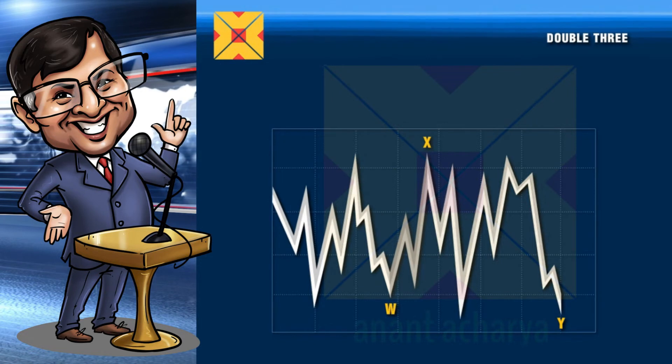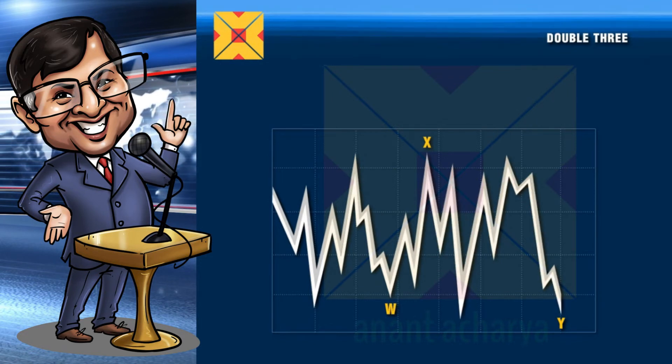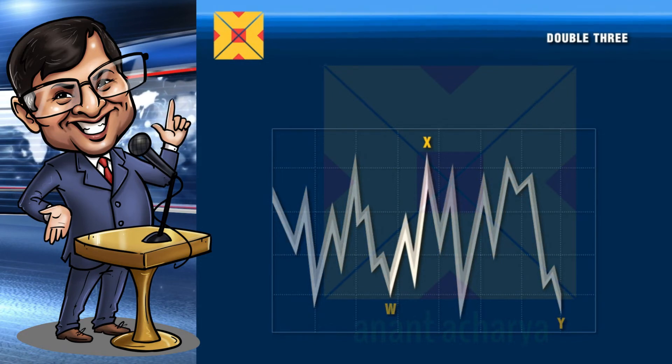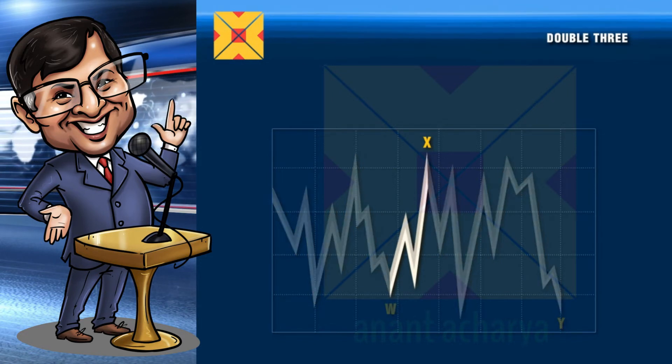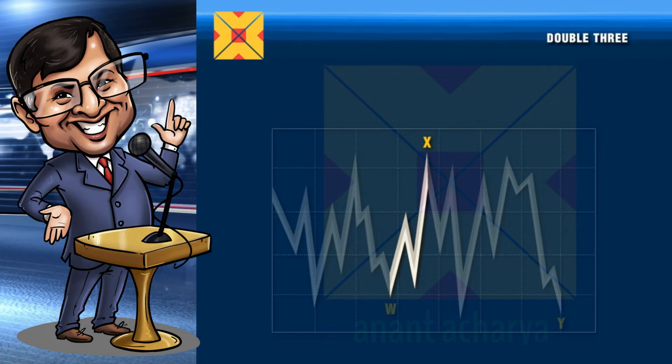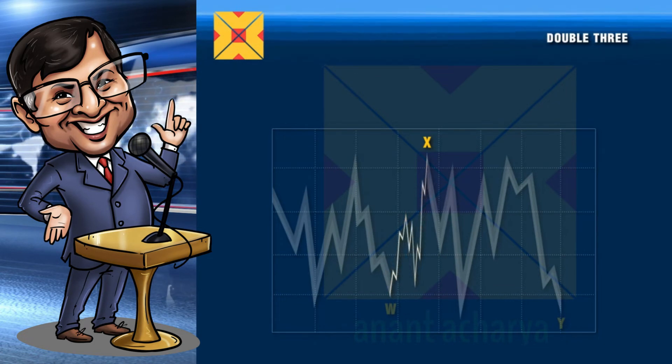The internal structure of the double three is three-three-three. The intervening three-wave pattern is normally likely to be a zigzag pattern.